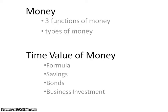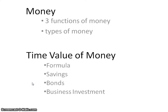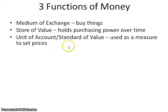This is the first screencast for Unit 4, Monetary Policy. In it we're going to talk about money, looking at the three functions of money and the two types of money. We're also going to get into the time value of money, where you need to look at that formula and think about how that affects people's savings, bonds, investments, and business investments.